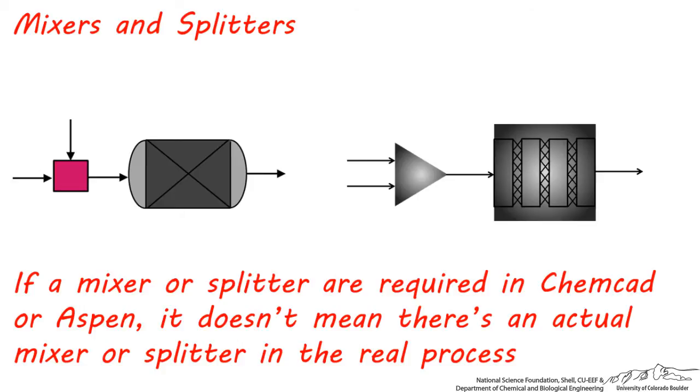it doesn't necessarily mean there's an actual tank or elaborate apparatus in place in the plant which mixes or splits process streams. I've noticed that most students tend to assume that if they use a mixer in ChemCAD or Aspen, which you're forced to do if you need to combine two or more streams,